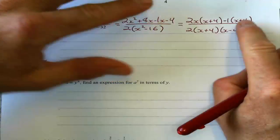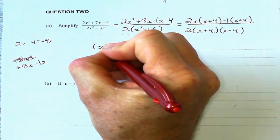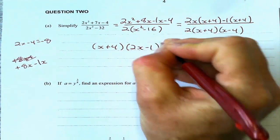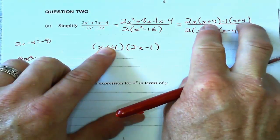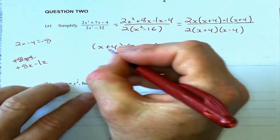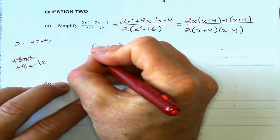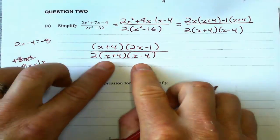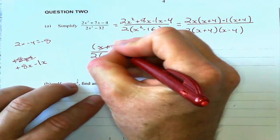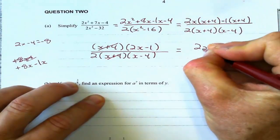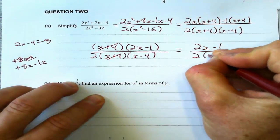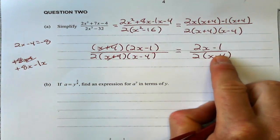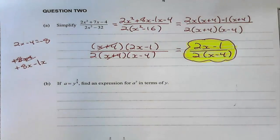So now this top one has a common factor of (x plus 4). I can rewrite it as (x plus 4)(2x minus 1). That's what the top one simplifies to. The common factor is a binomial this time instead of just an x, all over 2(x plus 4)(x minus 4). These common factors are going to cancel out. I'm left with (2x minus 1) over 2(x minus 4). Nothing else can cross cancel.